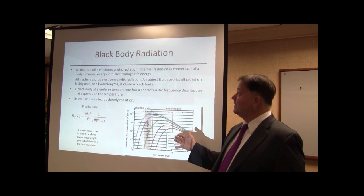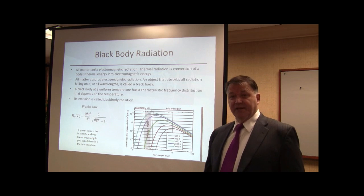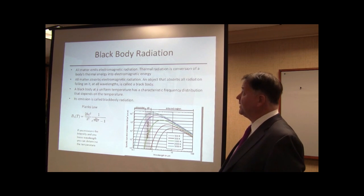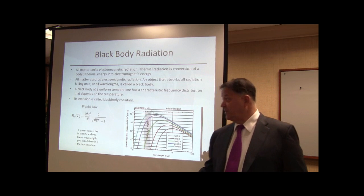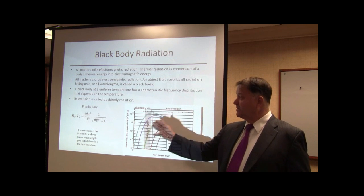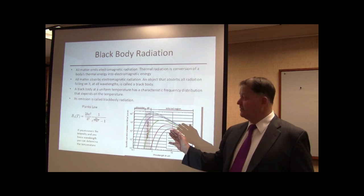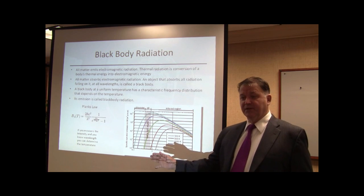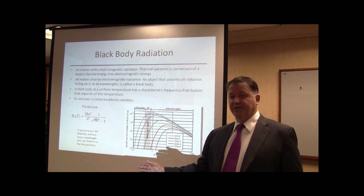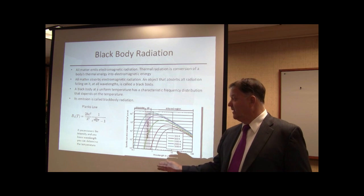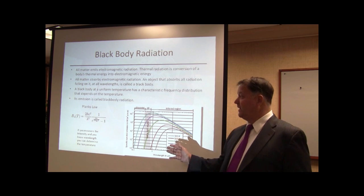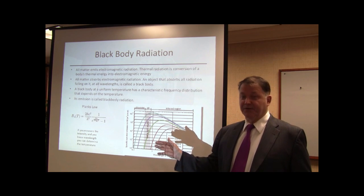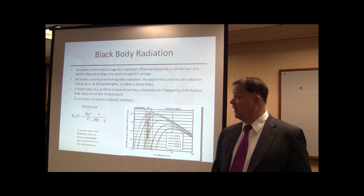So, blackbody radiation: all matter emits electromagnetic radiation. Thermal radiation is a conversion of body thermal energy into electromagnetic energy. Planck's law relates temperature and wavelength to signal level. Every type of target that you're surveying on the ground has certain characteristics that can be predicted if you know these parameters, and you can associate them with Planck's law.